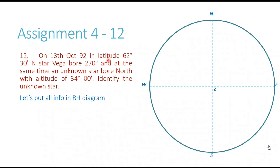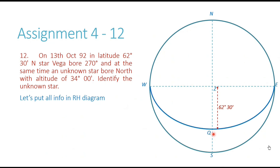In this question, they have given us the latitude — 62 degrees 30 minutes north. This tells us that the zenith will be north of the equinoctial or the Q point. In other words, the Q point would be south of the zenith. We know that the arc ZQ represents the latitude of the observer, which in our case is 62 degrees 30 minutes. So from the zenith, I go 62 degrees 30 minutes south — this is where the equinoctial would pass, and I have the Q point.